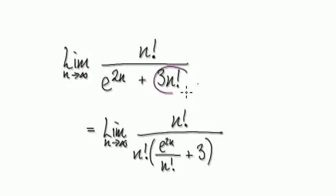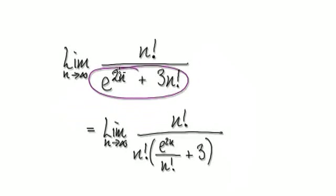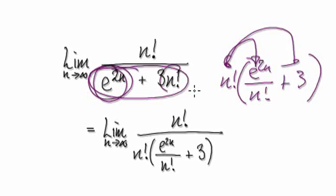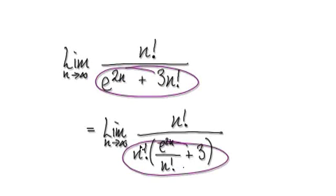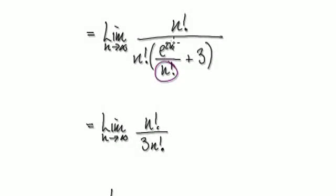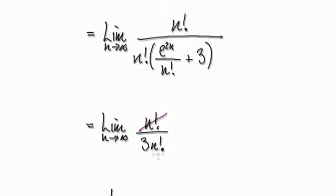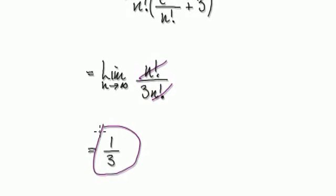Back to the original question: it boils down to which is bigger — this or this — as n tends to infinity. n factorial turns out to be much, much bigger. So let's factorize out n factorial. Looking at the denominator only, factorize out n factorial. You get e to the power of 2n over n factorial, plus three. Because n factorial is bigger than e to the power of 2n, as n tends to infinity this fraction heads towards zero, so the expression reduces to three times n factorial over three times n factorial. These cancel, giving one third. So the limit is one third.